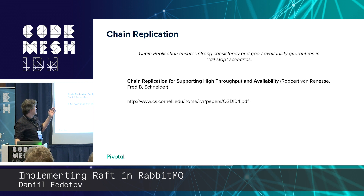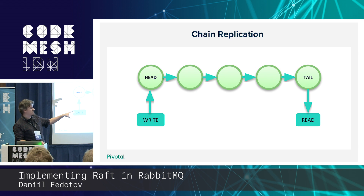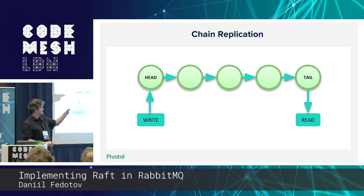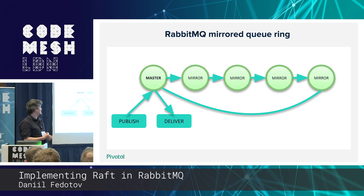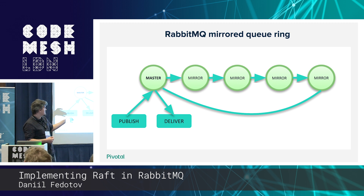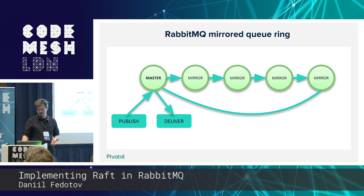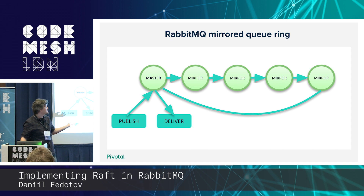Chain replication works like this: you have a head, a tail, and something in between. You write to the head and read from the tail. To do that with a master-and-mirror approach, we have to turn the chain into a ring of sorts — publish to master, deliver from master, and the message travels through the ring of mirrors. It works. It distributes messages and it fails over.